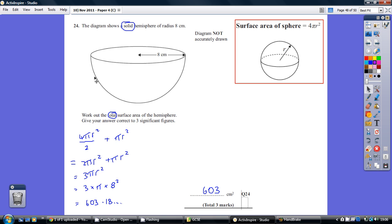So that's the surface area of the curved bit. But onto that, we've got to add the area of this circle, which of course is pi r squared. And 2 pi r squared plus 1 lot of pi r squared is 3 lots of pi r squared.